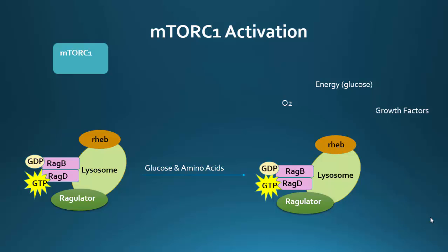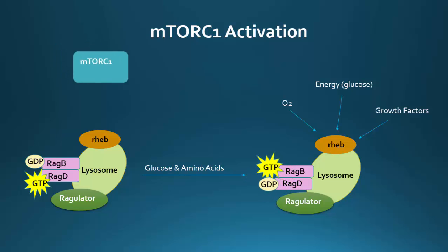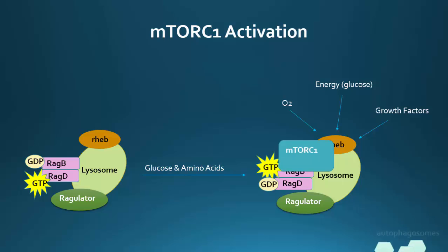mTORC1 requires two kinds of signals to become activated. First, amino acids and glucose signal the Rag dimers to dock to the lysosome and change phosphorylation states via the regulator guanine nucleotide exchange protein. Second, oxygen, energy, and growth factors load a third GTPase, Rheb, with GTP. Now mTORC1 can be recruited to the lysosome to start signaling cell growth and repressing autophagy by recalling autophagosomes.